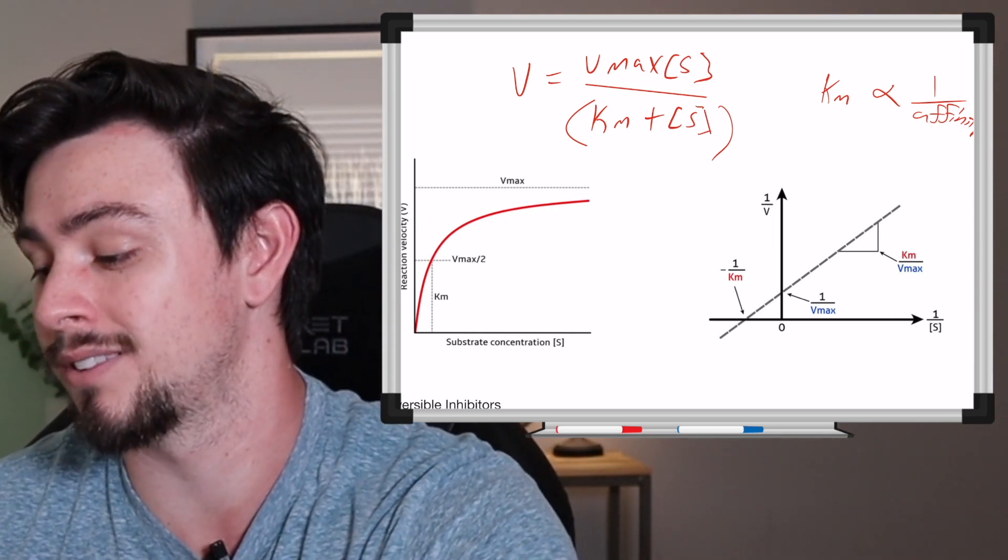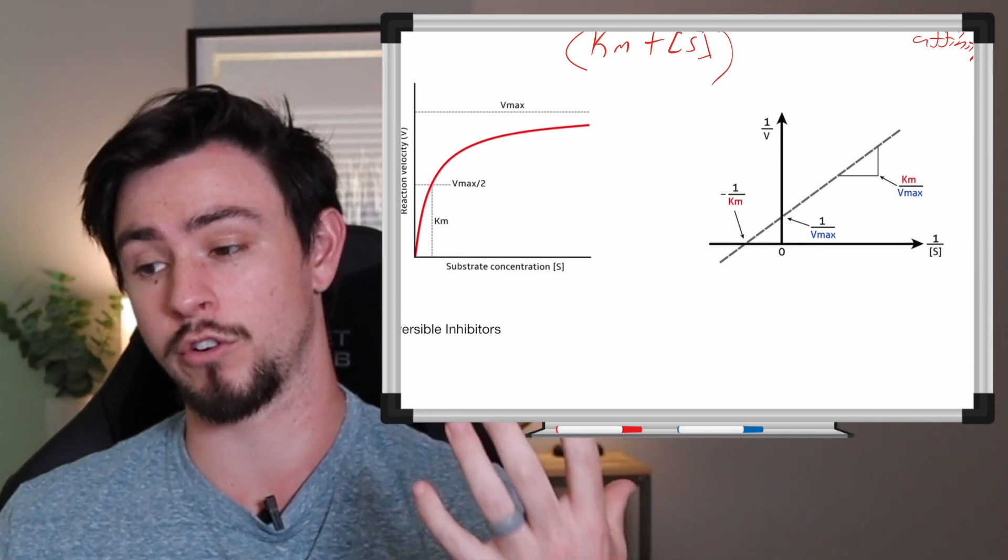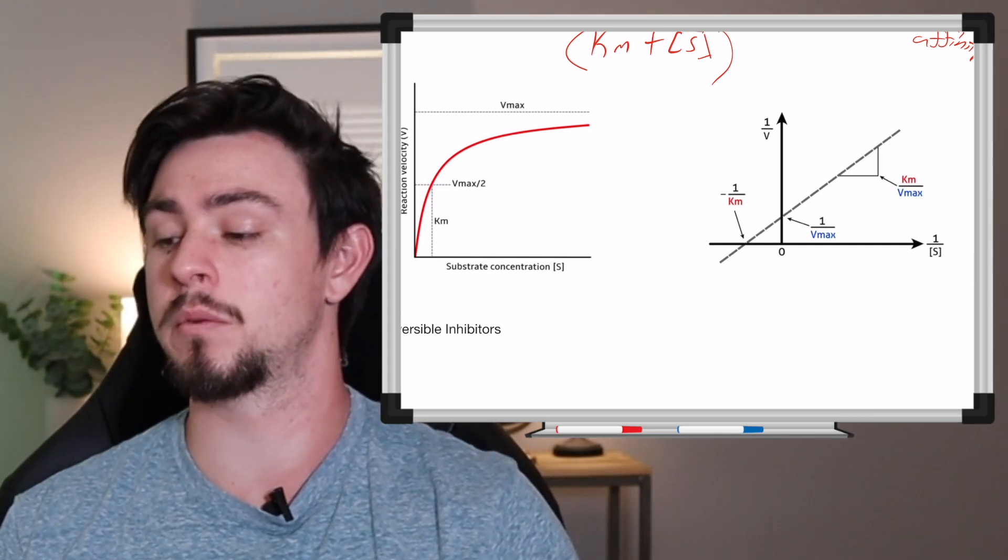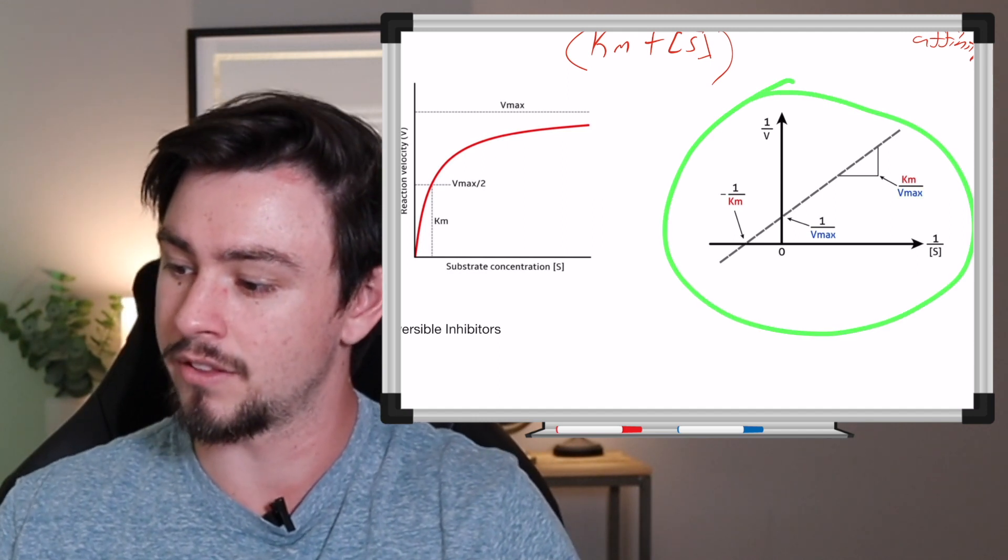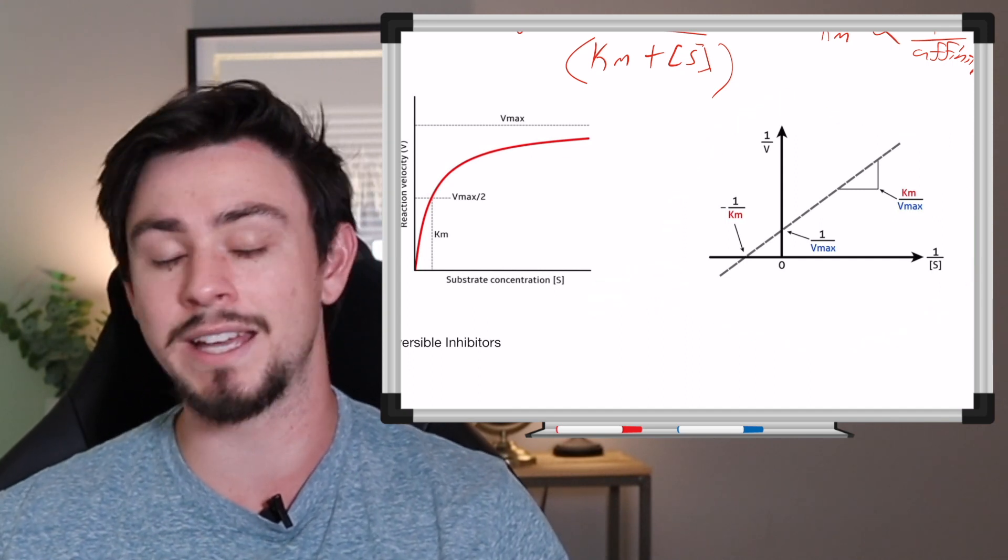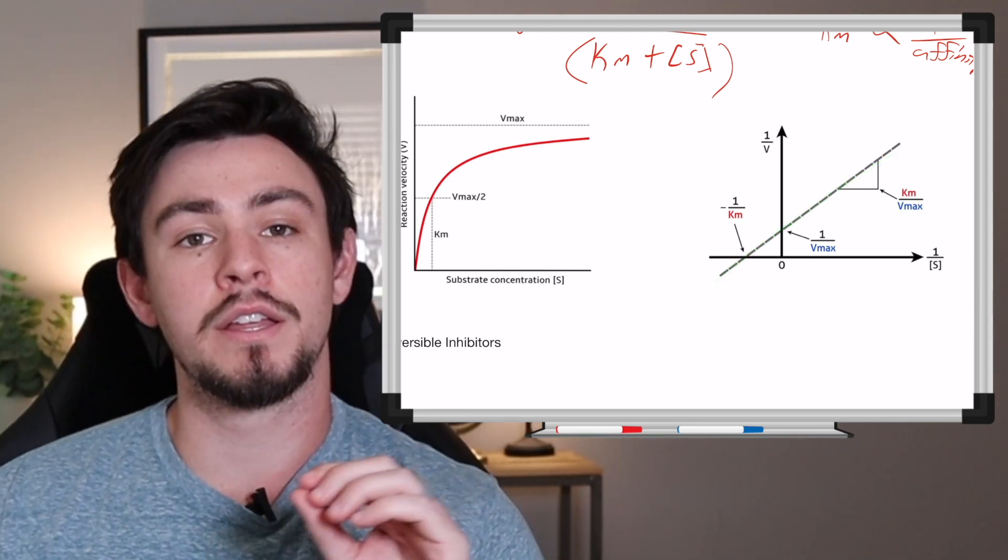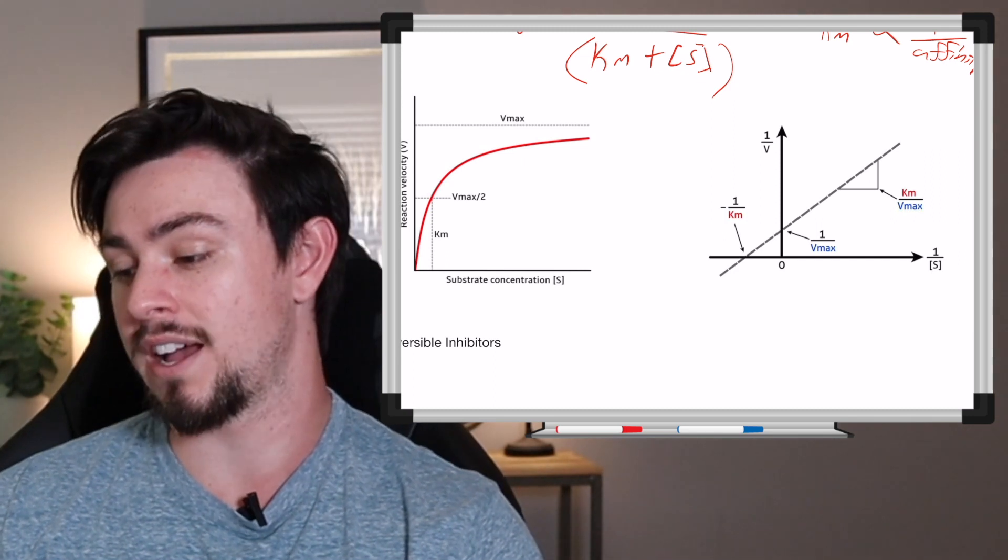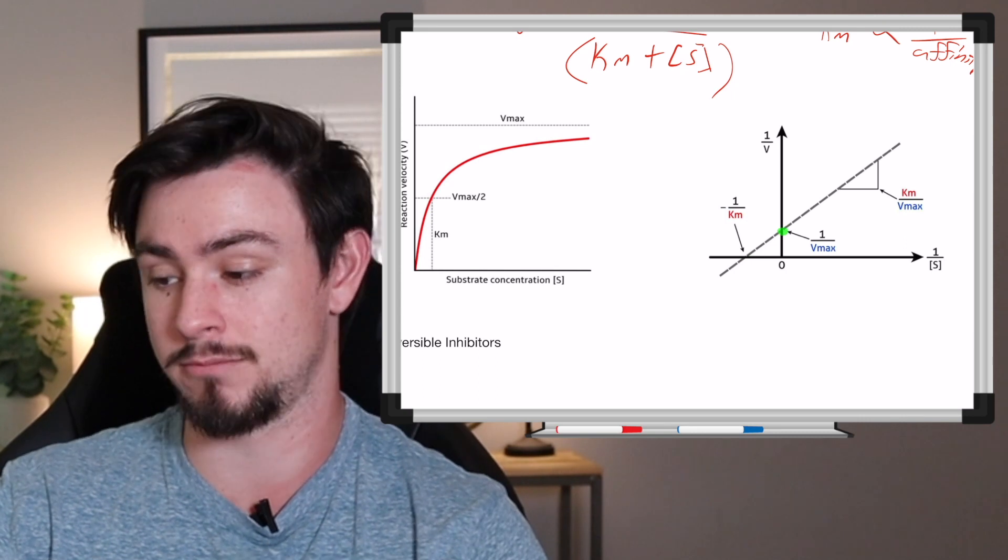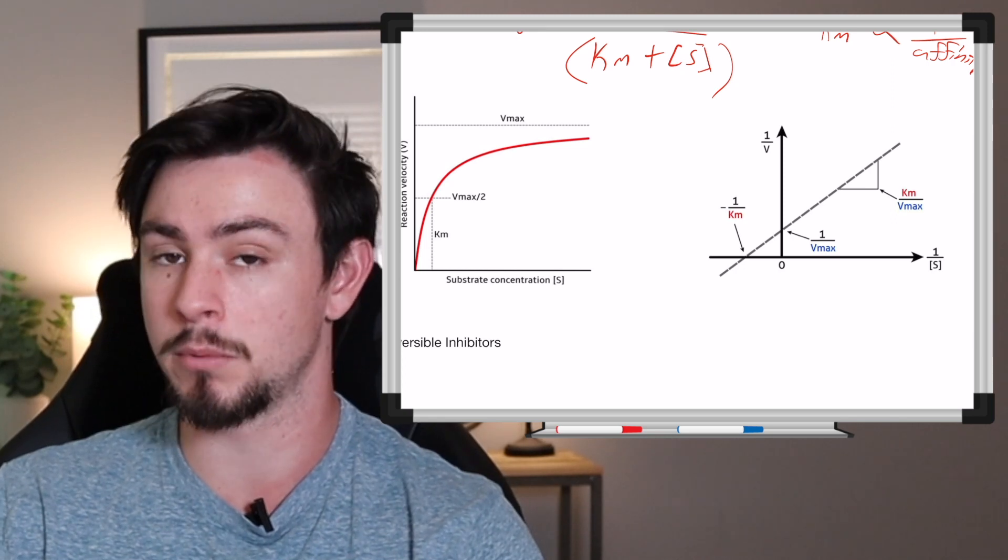Another way to look at these metrics, which is what's commonly tested, is the Lineweaver-Burk plots. And these are usually tested in the context of reversible inhibitors, which we'll get to in just a little bit. But first you need to understand what the intercepts mean. So this is something called a double reciprocal plot of this, meaning it's the same data, it's just shown in a different fashion. And they do that just so they can make the curve linear. The only takeaways that you need to note from this graph is that the x-intercept is negative one over Km, and the y-intercept is one over Vmax, and then the slope is Km over Vmax.